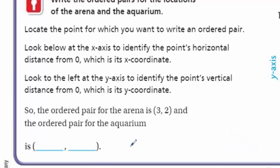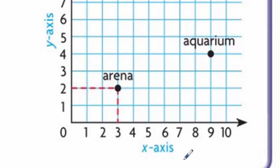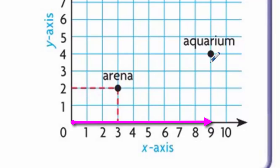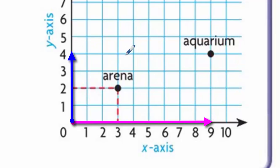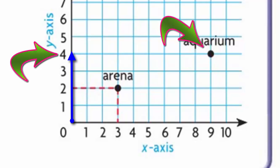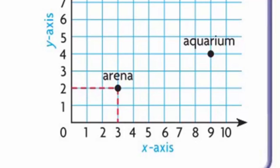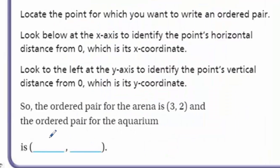So the ordered pair for the aquarium — I'm looking down to identify the point on the horizontal. I see it's lined up with a nine, so I'm going to say nine. Then when I look over to my vertical, the y-axis, I see the four. It's going to be (9, 4).